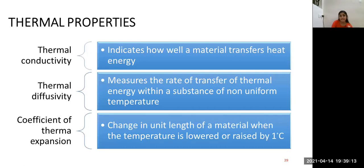Thermal properties. Thermal conductivity indicates how well a material transfers heat energy. Thermal diffusivity measures the rate of transfer of thermal energy within a substance of non-uniform temperature. Coefficient of thermal expansion is a change in unit length of material when the temperature is lowered or raised by one degree Celsius.